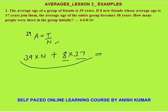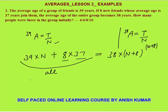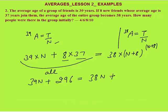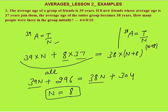This must equal the total age of all students combined. The total age of the new group can be calculated by average times number: there are now n + 8 students, and the new average is 38, so total age is 38 × (n + 8). Solving: 39n + 296 = 38n + 304. So 39n − 38n = 304 − 296, giving n = 8. That is option number 3.